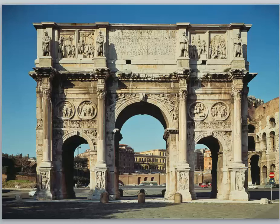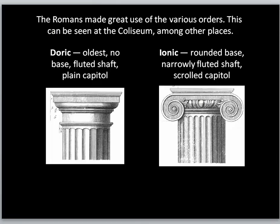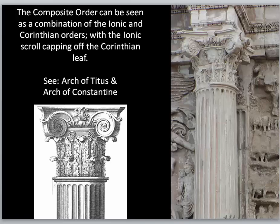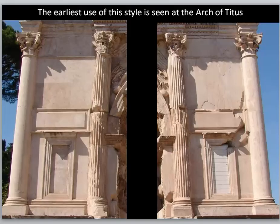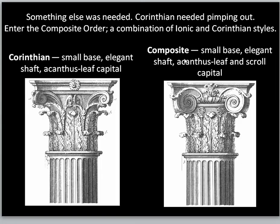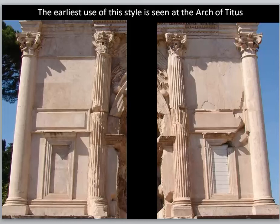There's something else you need to see — a development from what the Greeks established. The Greeks established the Doric and the Ionic, but the Romans introduce a new type of column: a combination of the Ionic and the Corinthian, which is the composite column. It combines the leaves with the scroll capital. It's not entirely original, but it is new. We can see this both at the arches of Titus and of Constantine. Going from plain, to a little more, to a little more, and then just turning it up — it makes a lot of sense to see the development of that type of column.